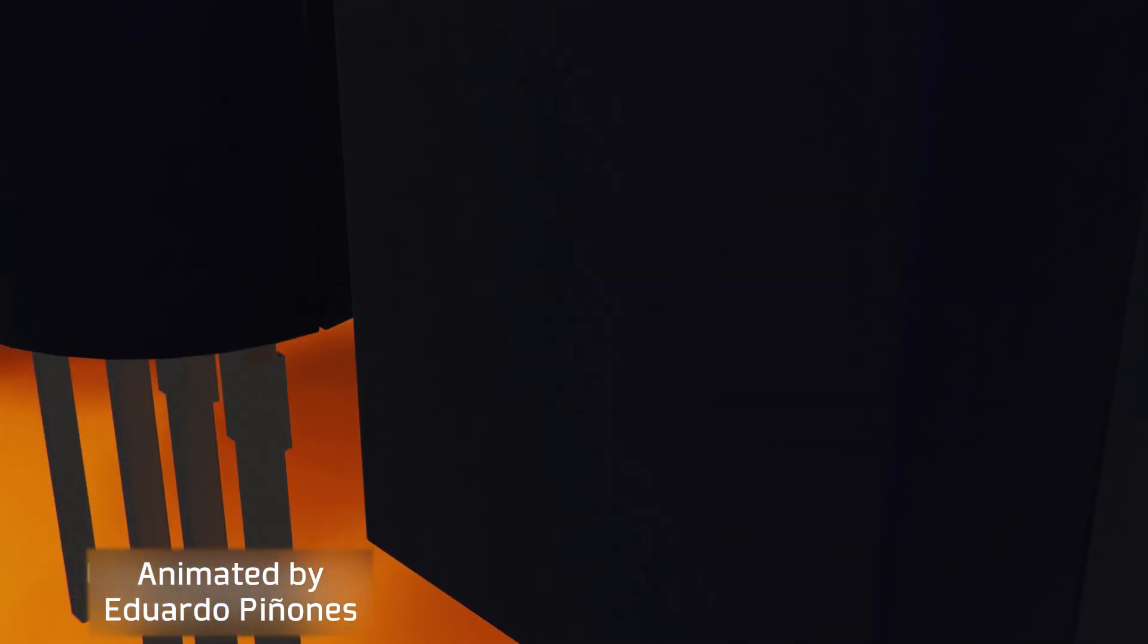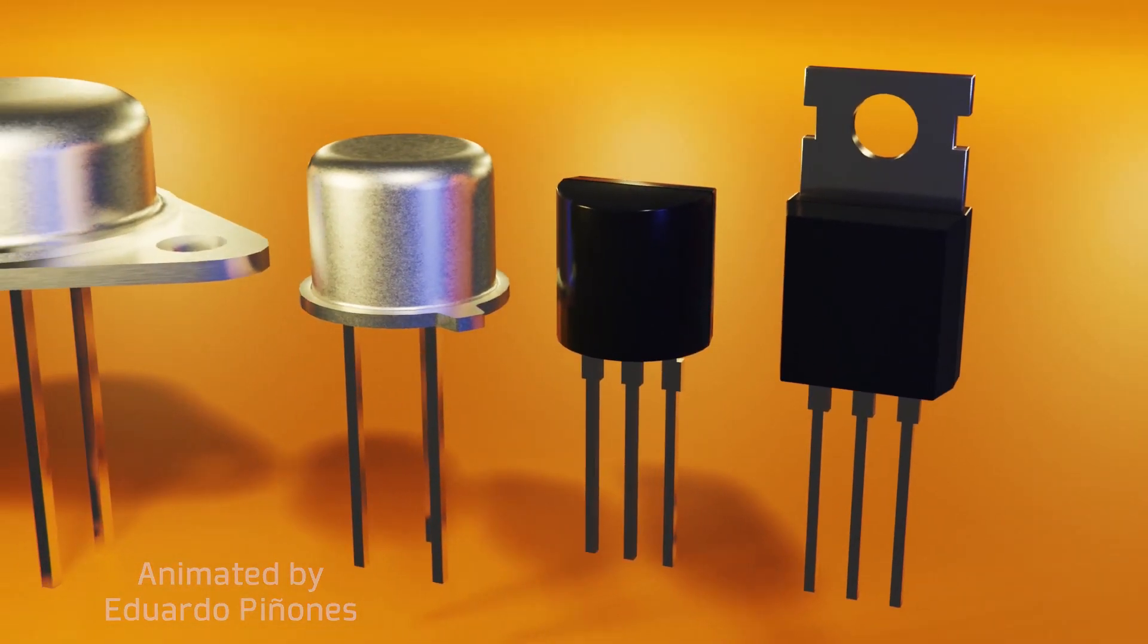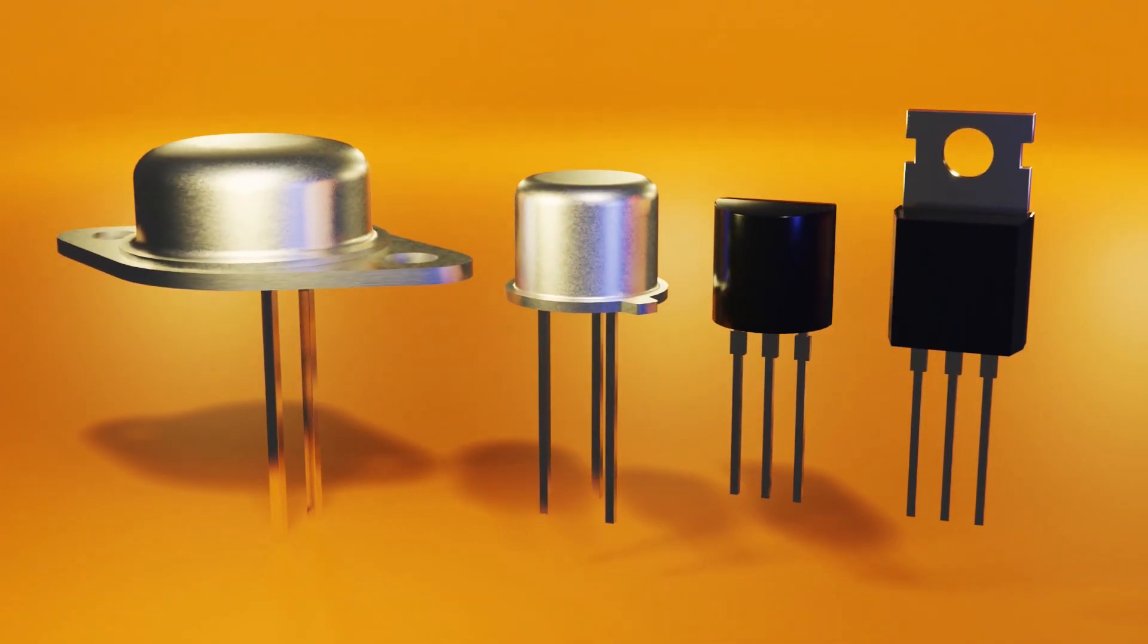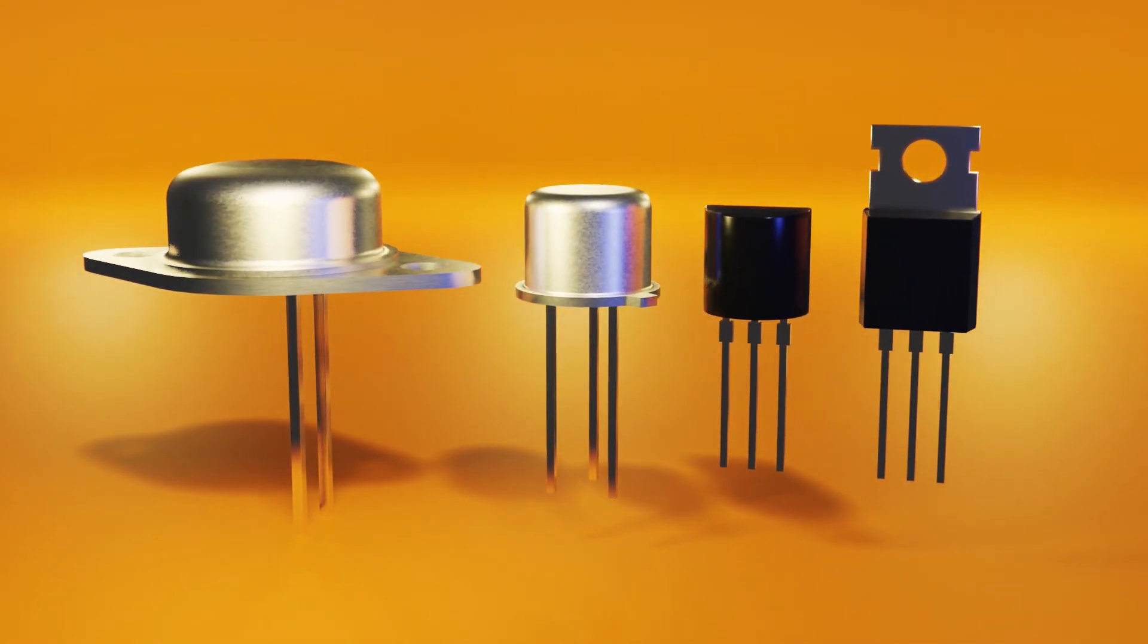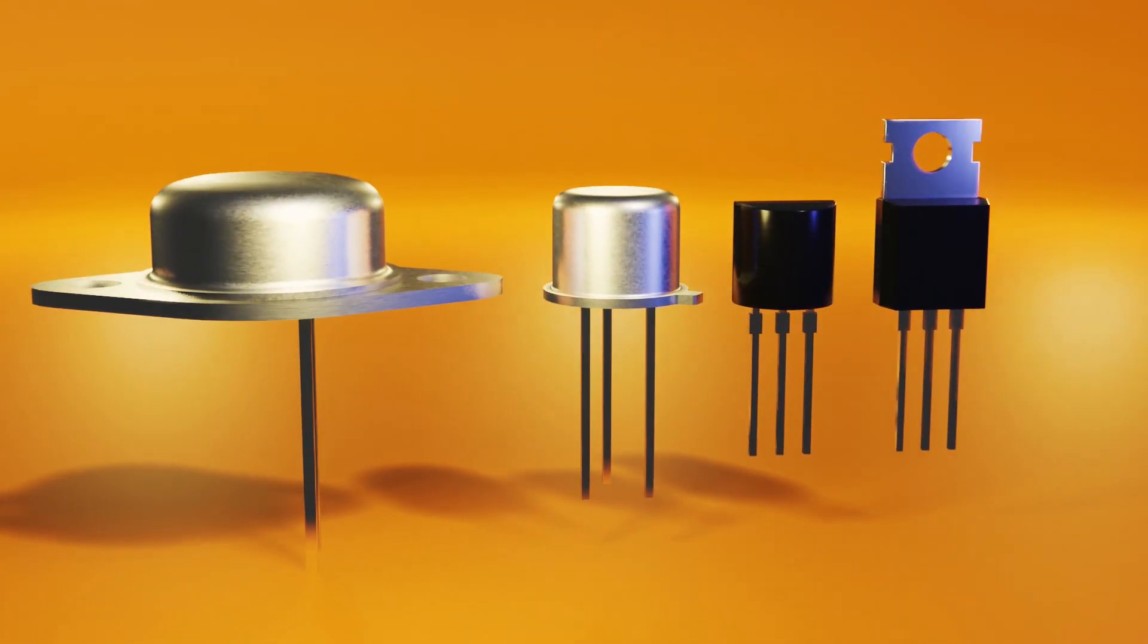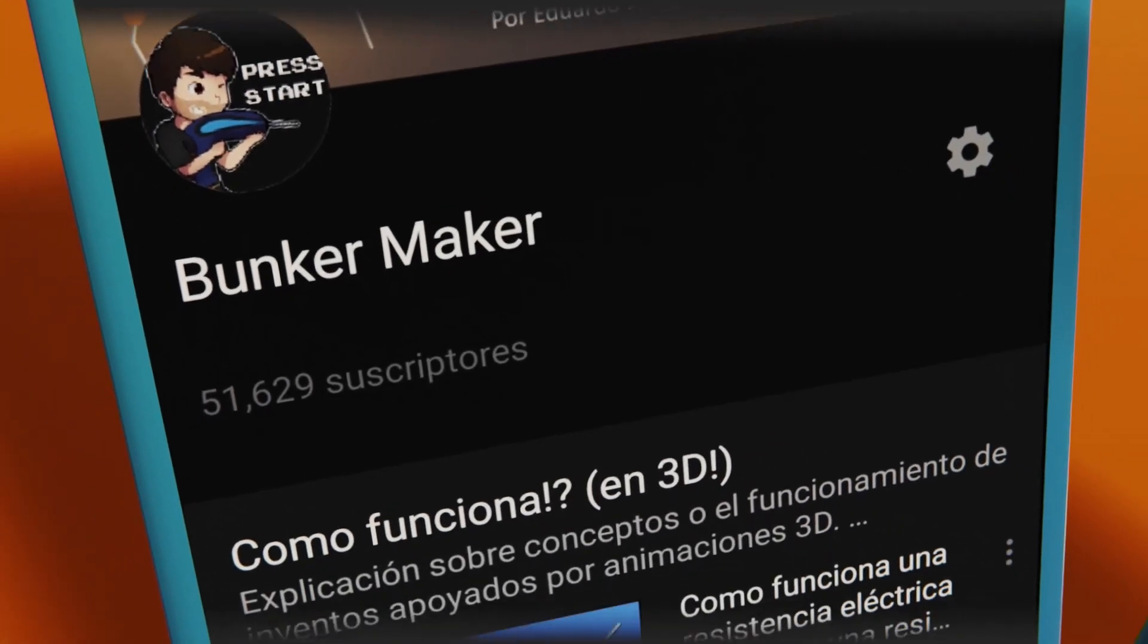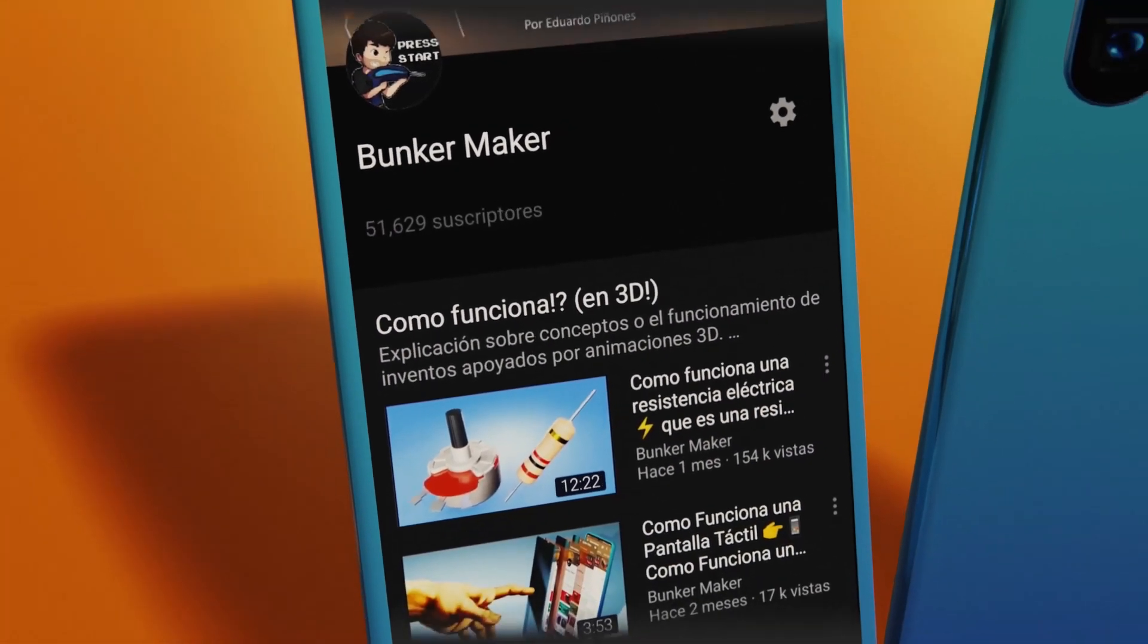The transistor is an electronic component capable of acting as a switch and also as an amplifier all through a small electrical signal and without moving parts. These characteristics have made the transistor become the main component from virtually any electronic device we can find, such as the phones we use every day or computers like the one I used to render this video.